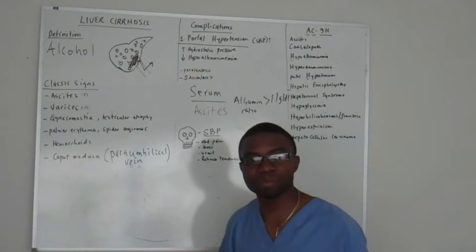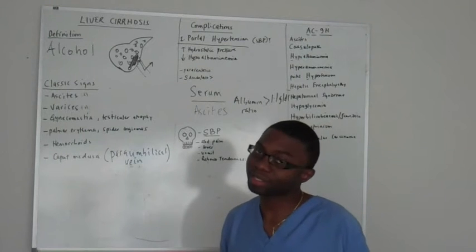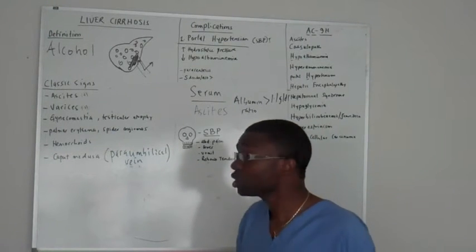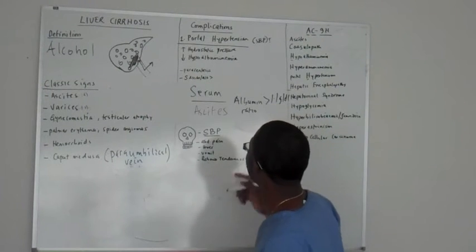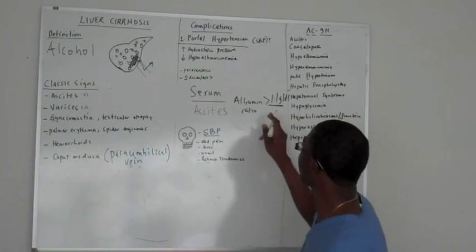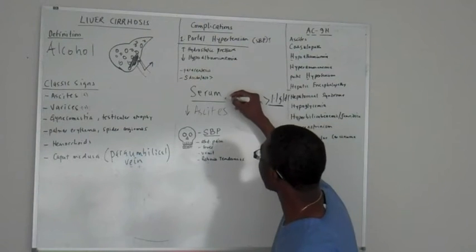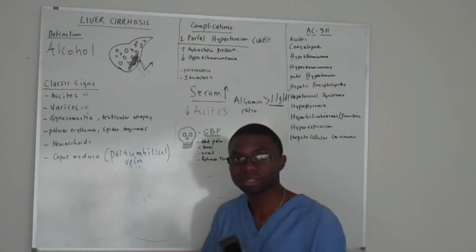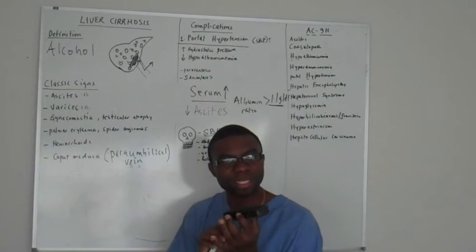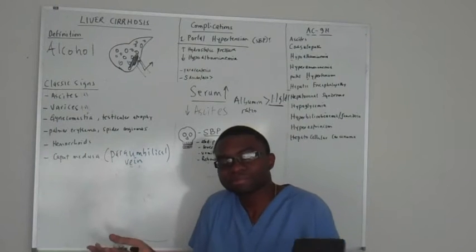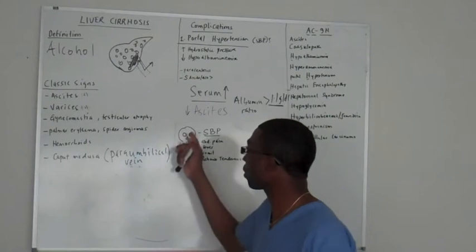In your serum, there should be an albumin level. In your ascites fluid, unfortunately, you shouldn't find albumin. If the number is greater than 1.1, what they're trying to say is: for this number to be greater than 1, you have to have a low amount of albumin in the ascites fluid and a higher amount of albumin in your serum. Because if you have a smaller number in the ascites fluid, you don't have enough albumin inside.